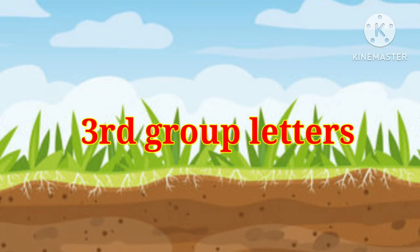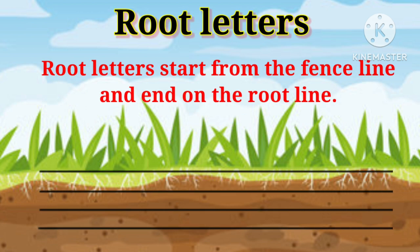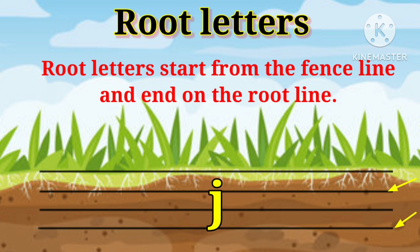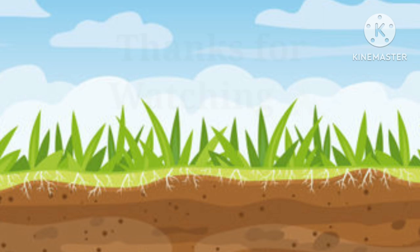Now let's move on to the third group, that is root letters. Root letters start from the fence line and end on the root line. There are five examples of root letters: G, J, P, Q, and Y.